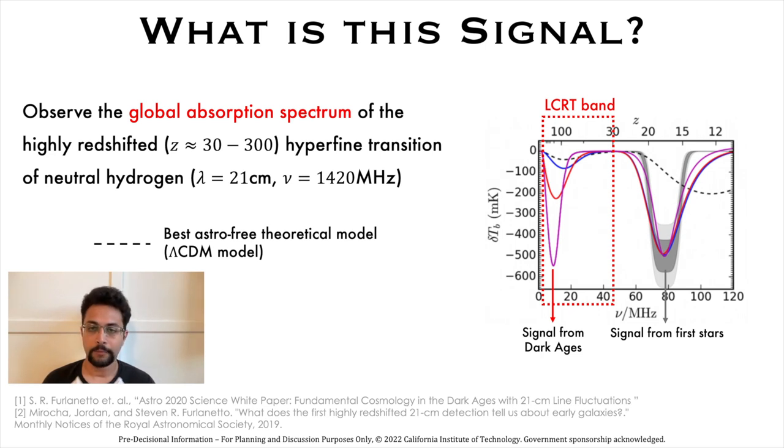The signals from the dark ages and first stars are supposed to arrive at different frequencies as shown in this plot.